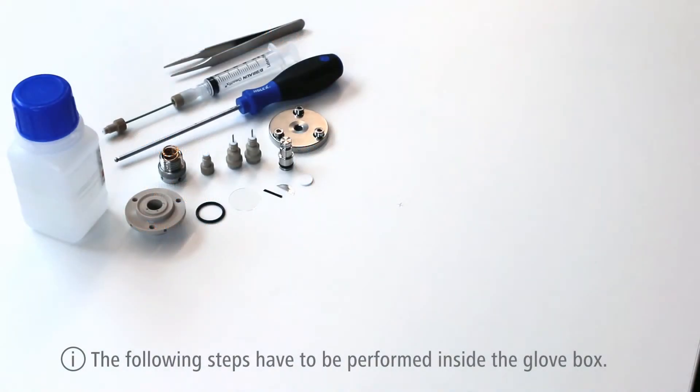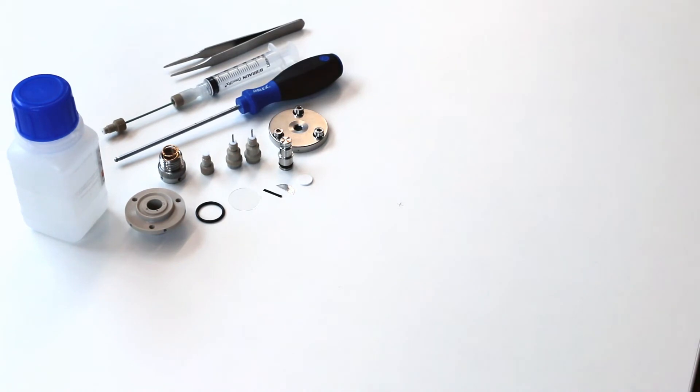Before starting the assembly inside the glove box, all components need to be dried in a vacuum oven overnight.